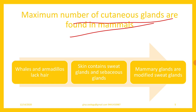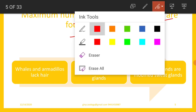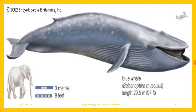Whales and armadillos lack hair. Skin contains sweat glands and sebaceous glands. Mammary glands are modified sweat glands. The whale is the biggest mammal and the biggest terrestrial mammal is the elephant.